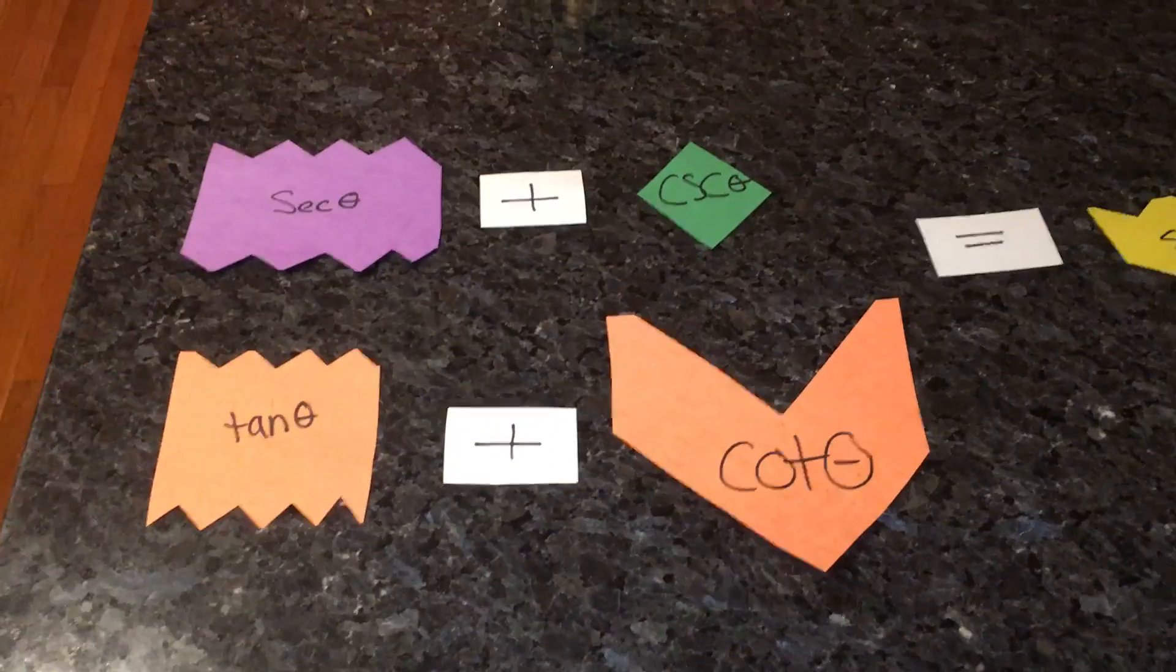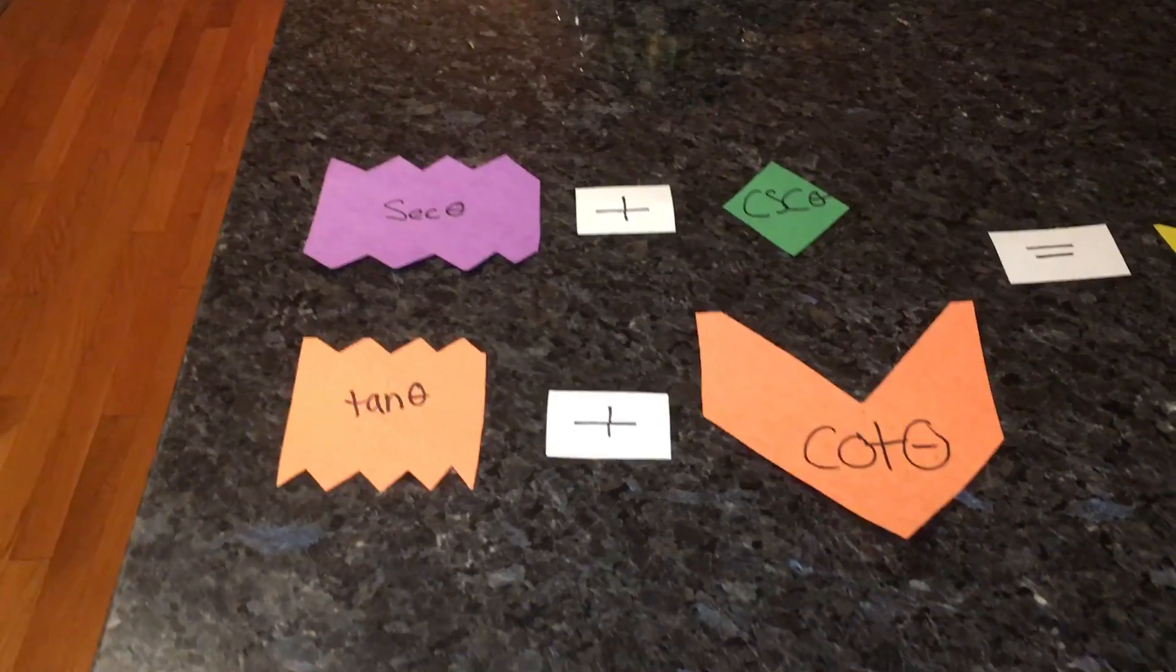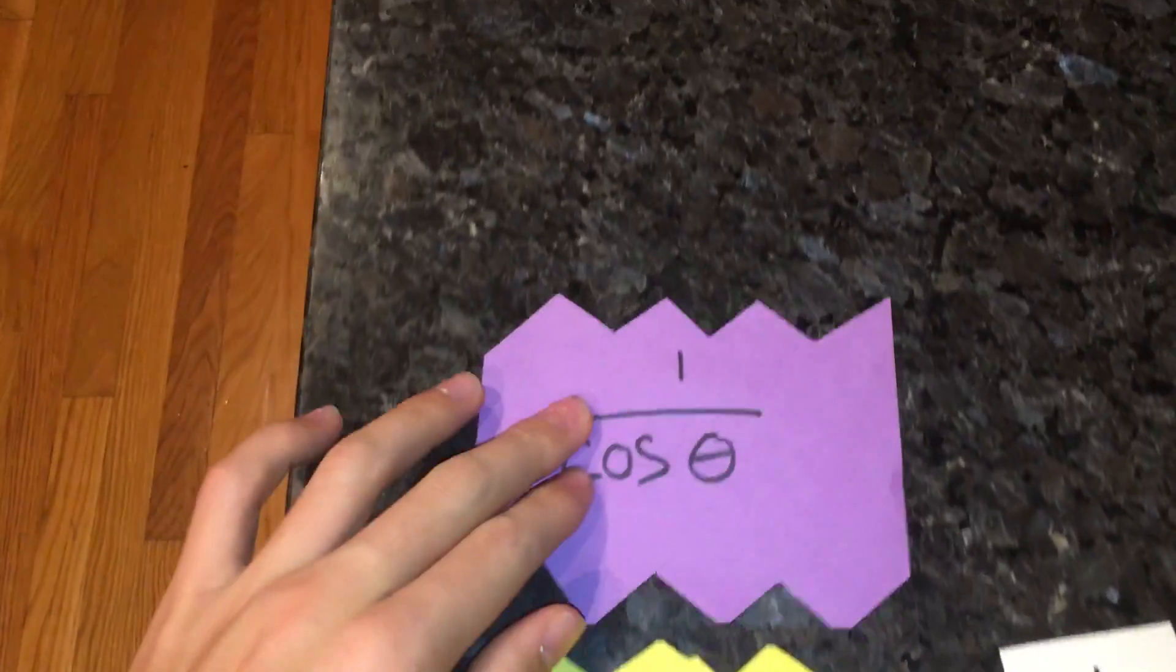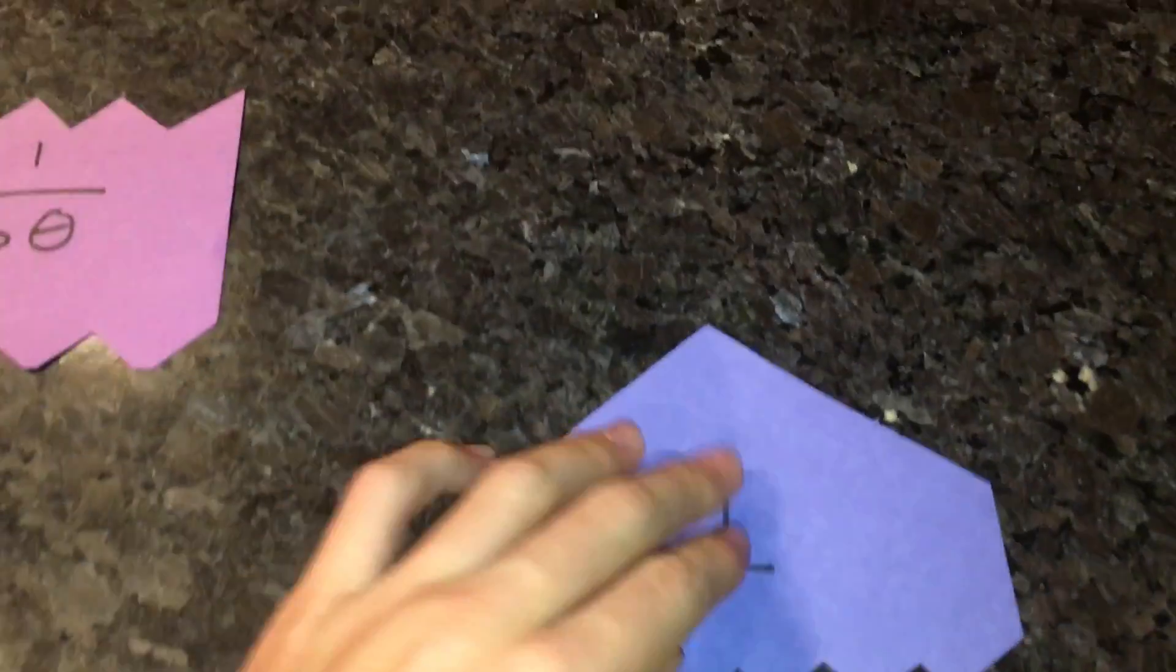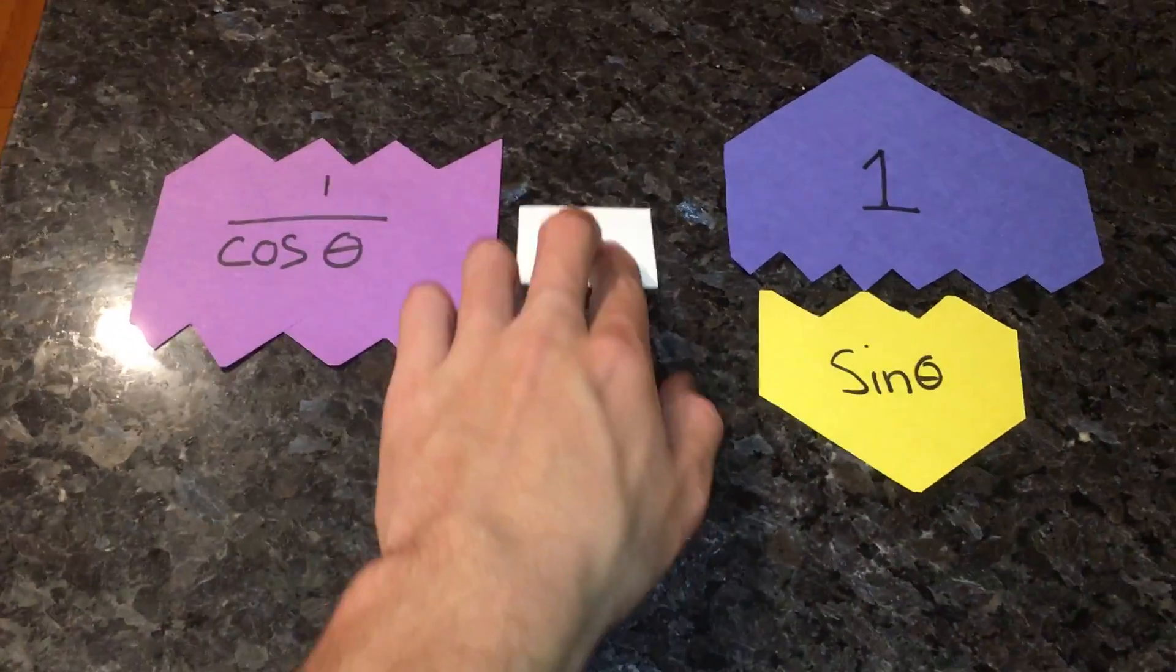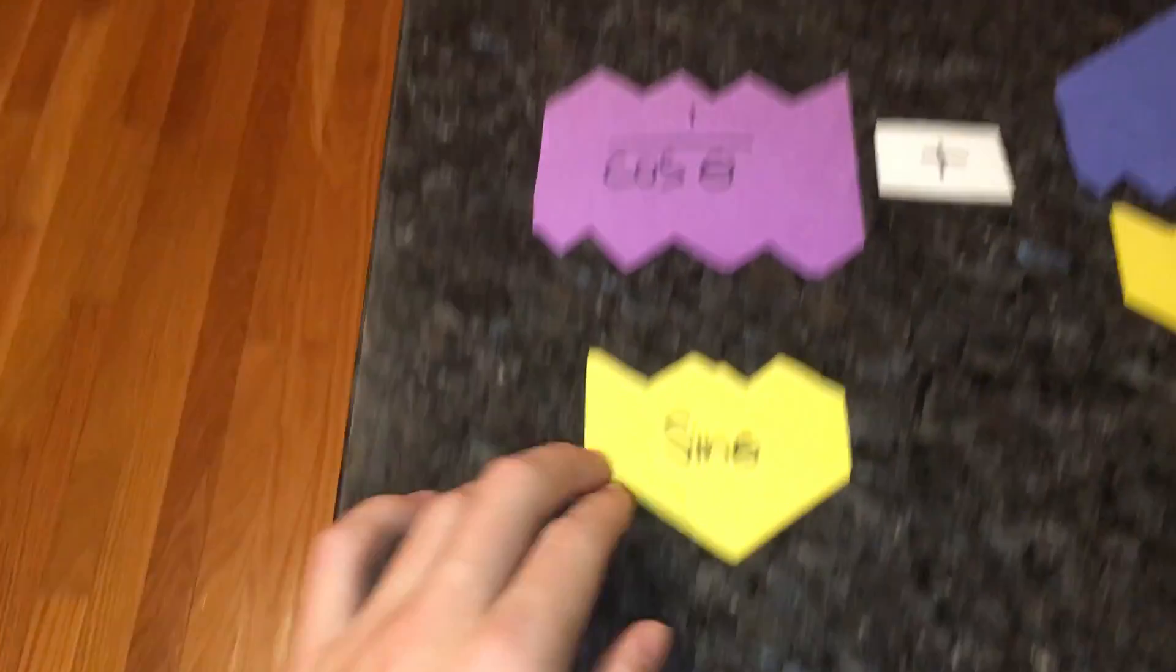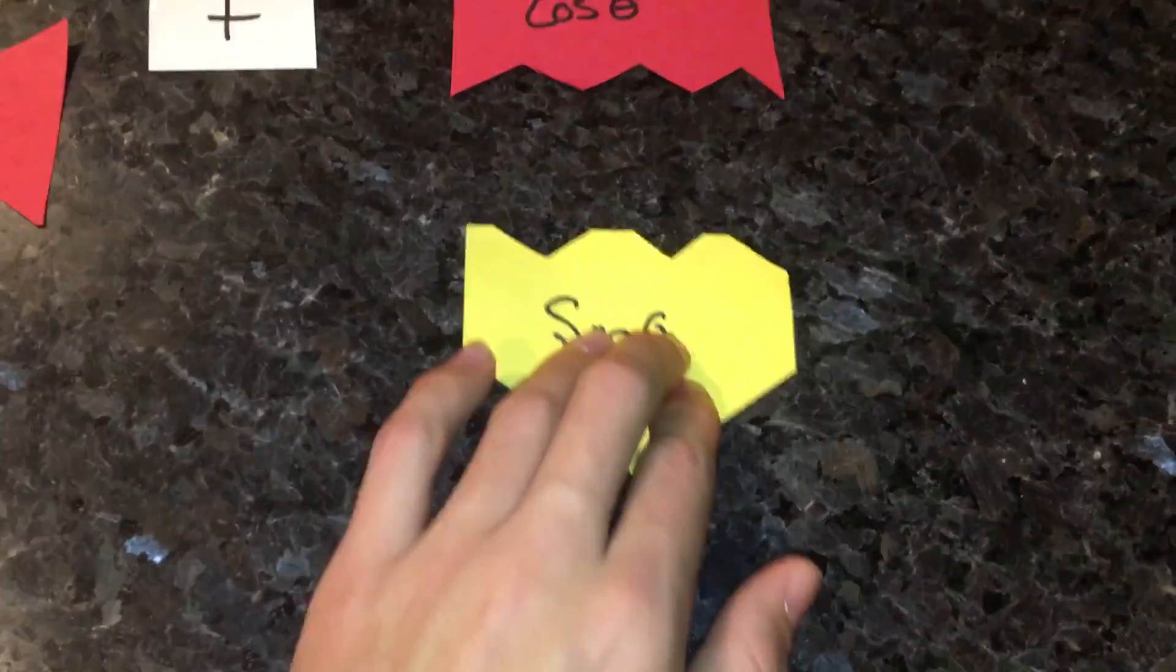So let's start with this side. Let's set all of these in terms of sine and cosine, so that will make it easier for us. To start with secant, that equals 1 over cosine plus cosecant, which is equal to 1 over sine. Then we have tangent plus cotangent. Tangent is sine over cosine, plus cotangent, which is equal to cosine over sine.